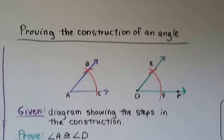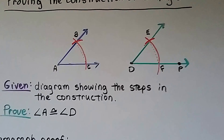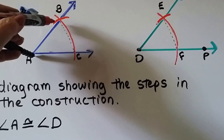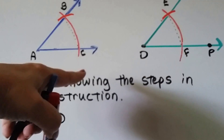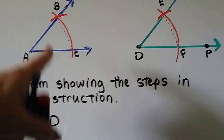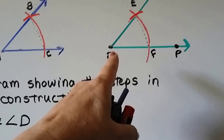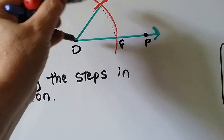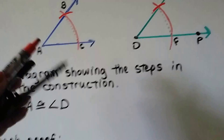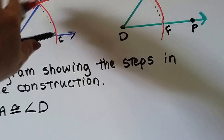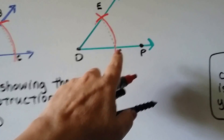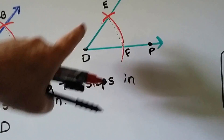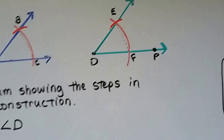Now here's proving the construction of a congruent angle. We had original angle BAC. We placed the compass on A and made an arc through both rays, marking intersections C and B. Then we drew ray DP, placed the compass on D with the same setting, and made the same arc, marking F. We measured the distance BC, placed the compass on C to make an arc, marked intersection E, and drew ray DE through that intersection.